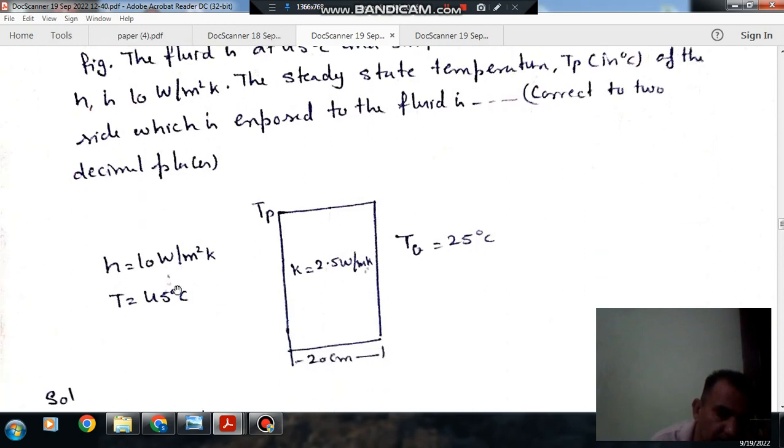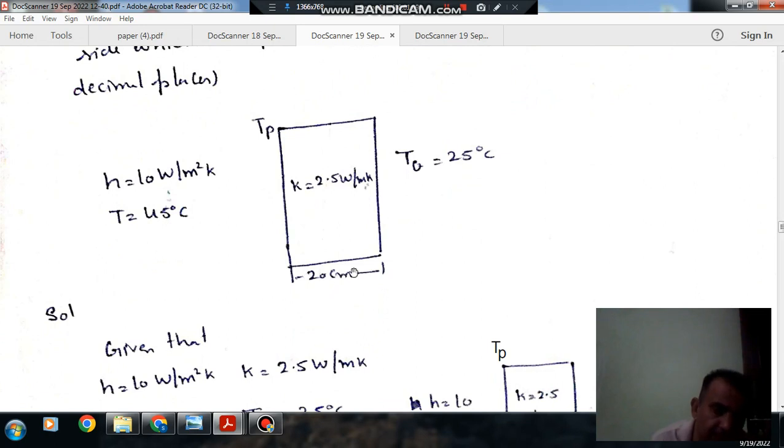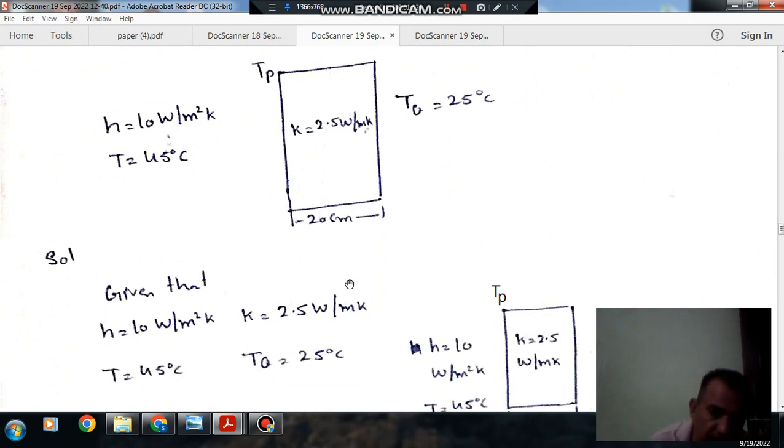H is 10 Watt per meter squared per Kelvin and temperature of fluid is 45 degrees Celsius. This is surface Q and this temperature is 25 degrees Celsius. Conductivity K is 2.5 Watt per meter per Kelvin and thickness is 20 centimeters.